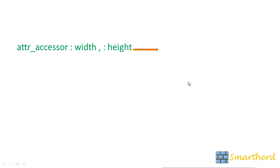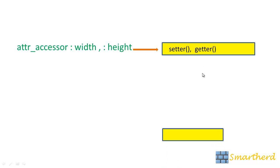Now so far we have seen that attr accessor width and height is creating getters and setters. Now what if we only want a getter.